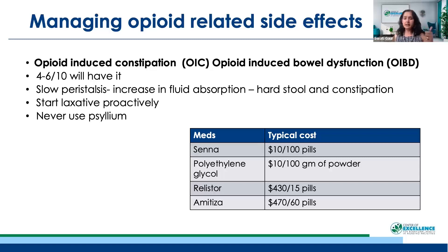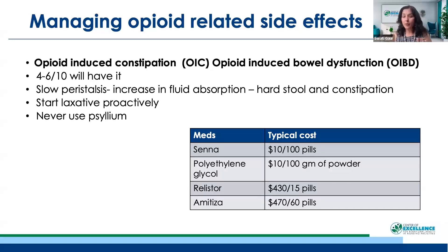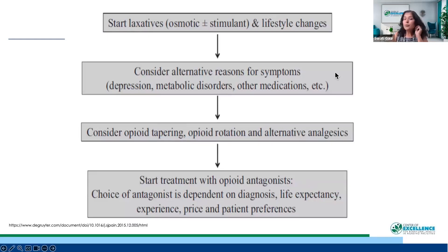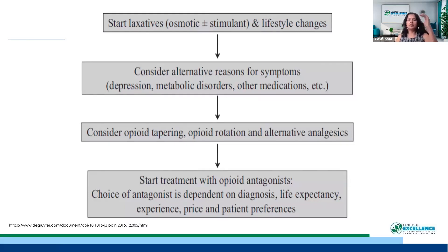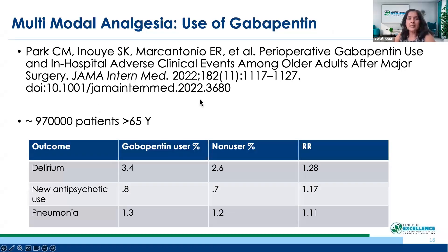Senna and Miralax (polyethylene glycol) are great medications. Relistor and Amitiza are also great but cost more, so figure out who is paying. Generally, patients will do well with Senna, lactulose, sorbitol, or Miralax. When constipation has already set in, start laxatives and lifestyle changes, consider alternative reasons for symptoms, consider opioid tapering, and then move to Relistor and Amitiza if needed.